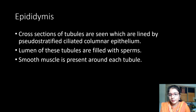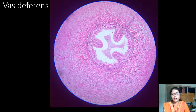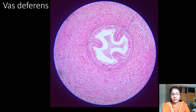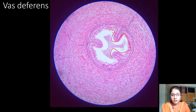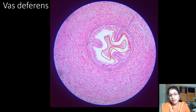The next structure is the vas deferens. The epididymis continues to form the vas deferens, which is highly identified by its very thick muscular structure — we can see layers of muscles around it. The inner lining is thrown into longitudinal mucosal folds, giving the lumen a star-like appearance. In the center of the lumen we can see the collection of matured sperms. The epithelium is tall columnar or pseudostratified columnar epithelium.